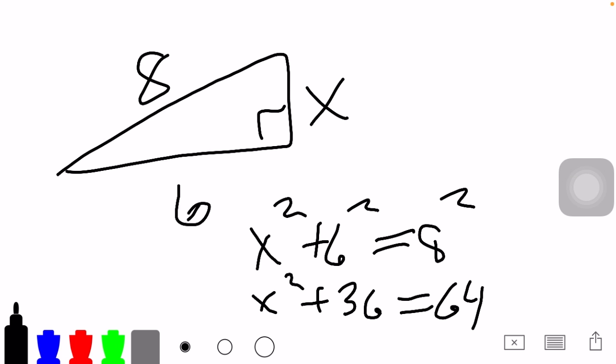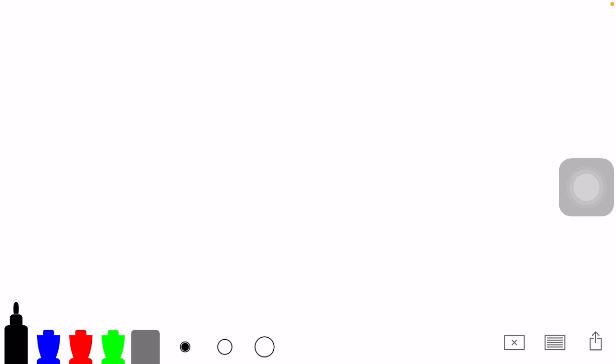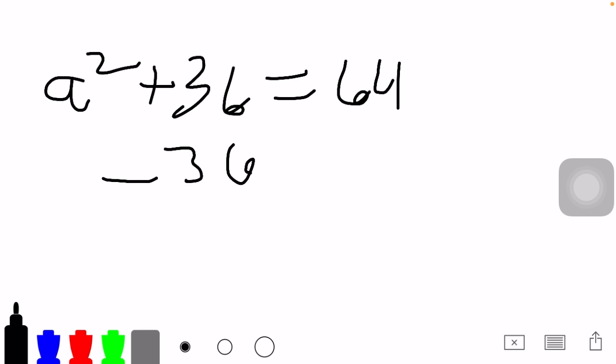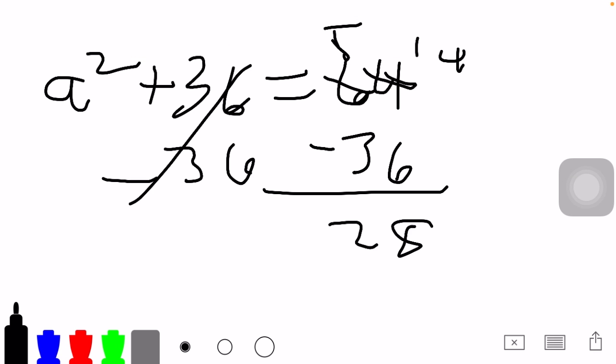Now, we need to isolate, in this case, we could just call X, A. We need to isolate A squared. So we need to subtract 36 from both sides to make that happen. A squared plus 36 is equal to 64. We're going to subtract 36 and we are going to get that A squared is 28.